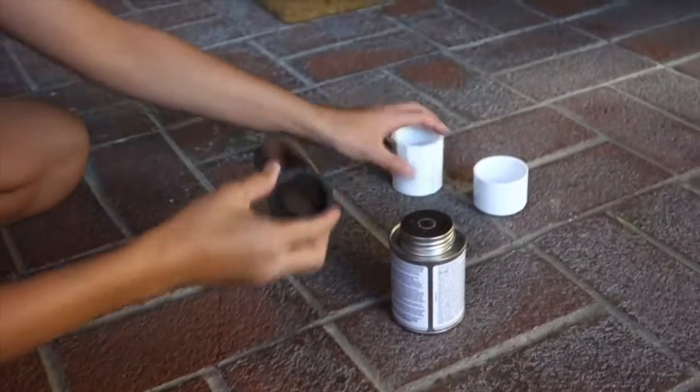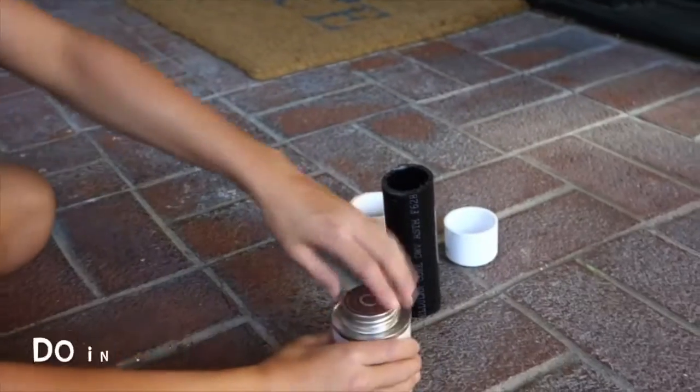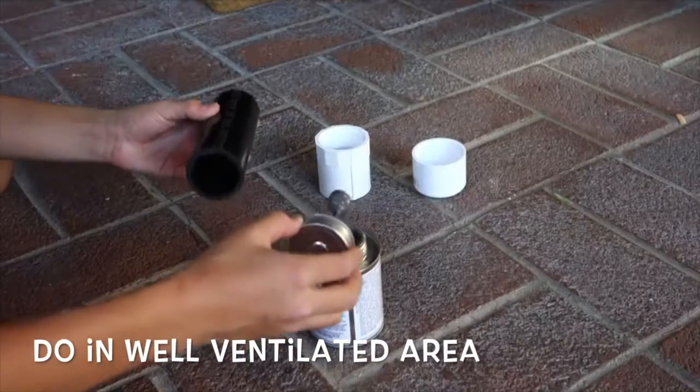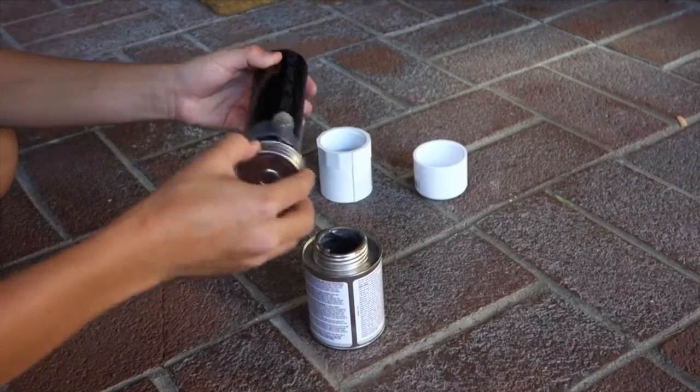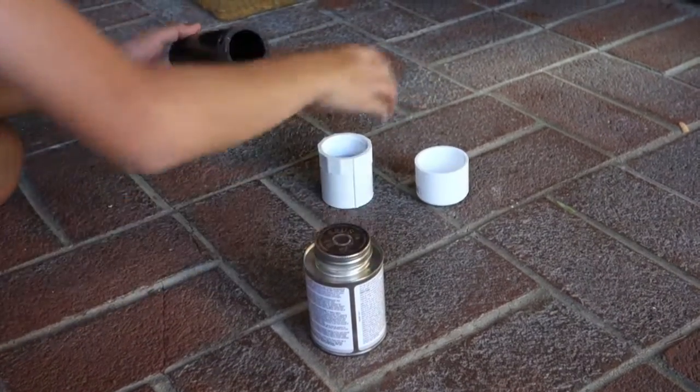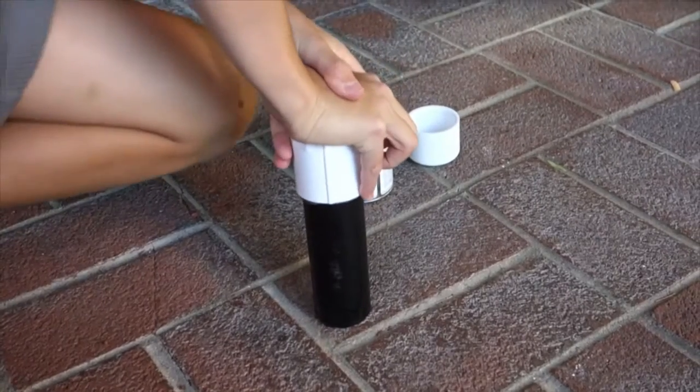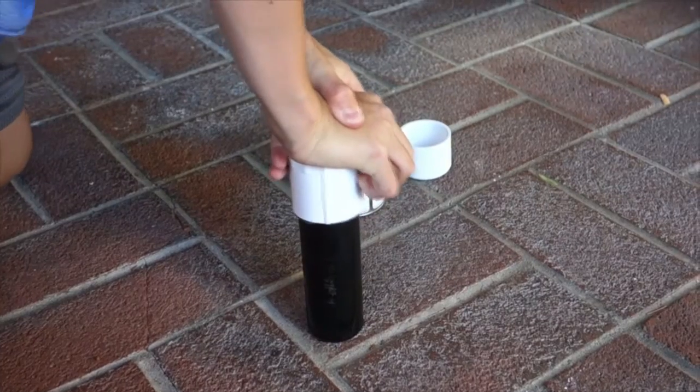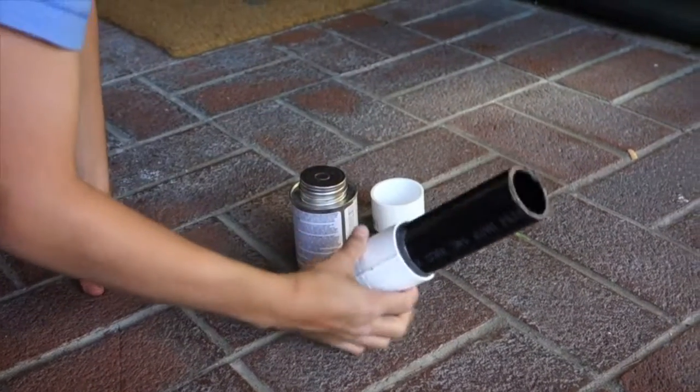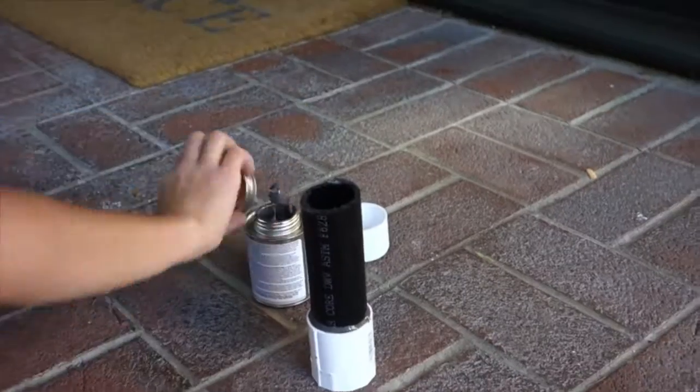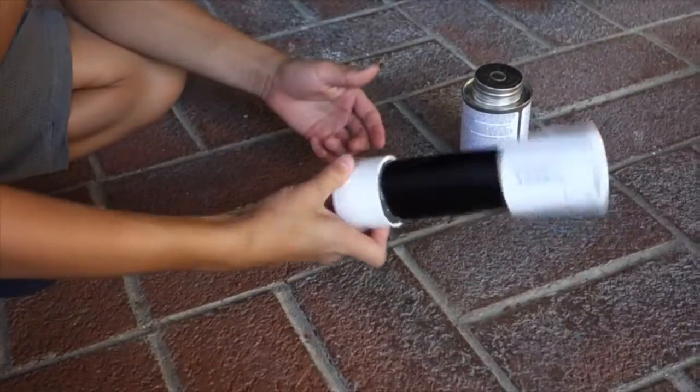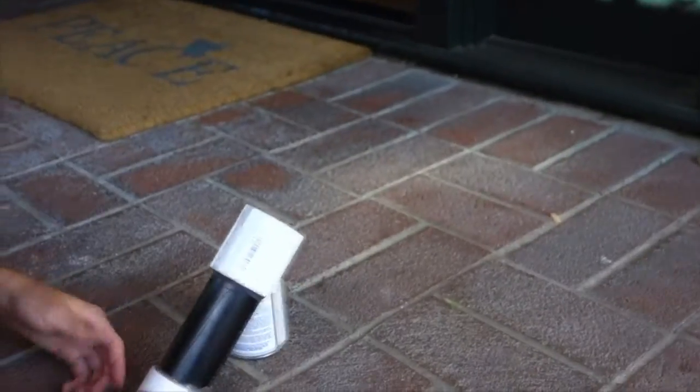For this next step, you're gluing together your combustion chamber. Take your PVC glue and do this in a well-ventilated area. Put a cap on and apply some pressure. Then do the same thing for the other side. There you go, that's your combustion chamber.